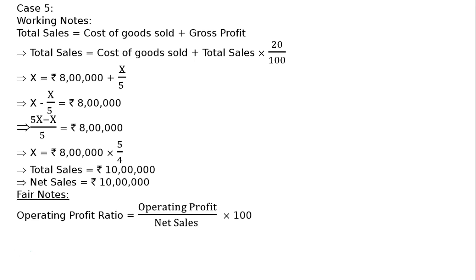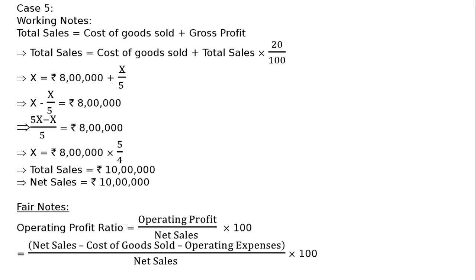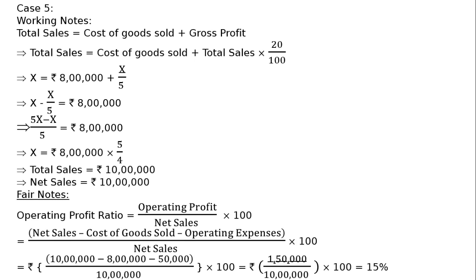In the final notes, operating profit ratio is equal to operating profit upon net sales into 100, that is net sales minus cost of goods sold minus operating expenses, upon net sales into 100. That is Rs. 10 lakhs minus Rs. 8 lakhs minus Rs. 50,000, whole divided by Rs. 10 lakhs, multiplied by 100, equal to Rs. 1 lakh 50,000 upon Rs. 10 lakhs into 100, that is 15%.